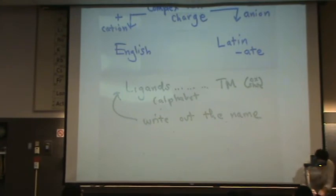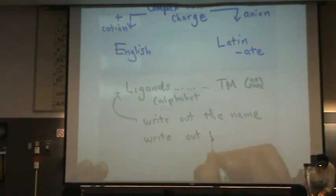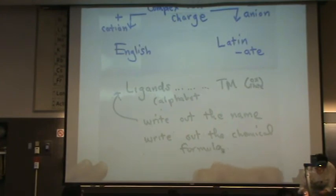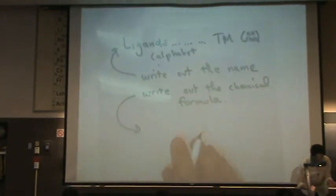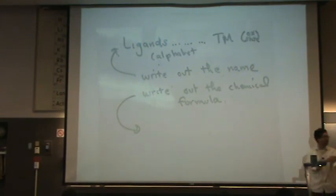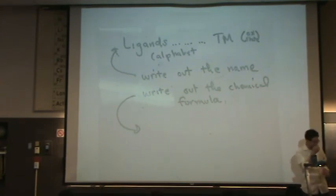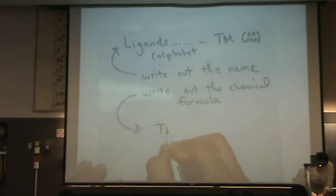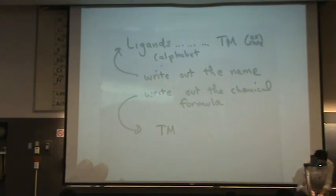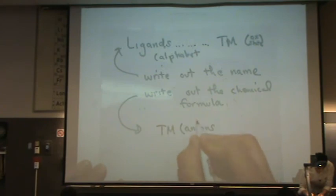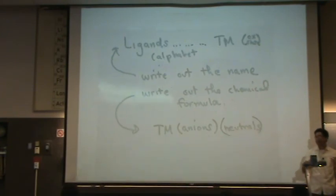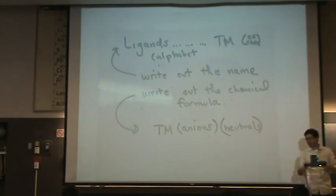If you need to write out the chemical formula, you do the following — and this is technically how it works, though you'll see professionals and even your textbook not always follow this method. You write the symbol of the transition metal first, then the anions next, then the neutrals. So for example: Cu, NH3, Cl, whatever.